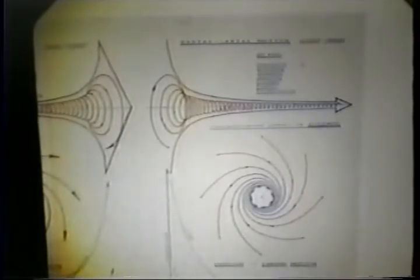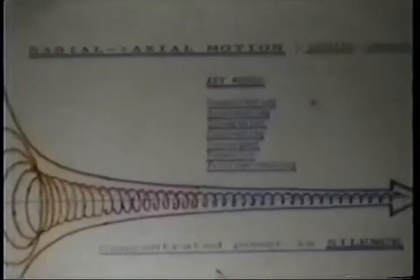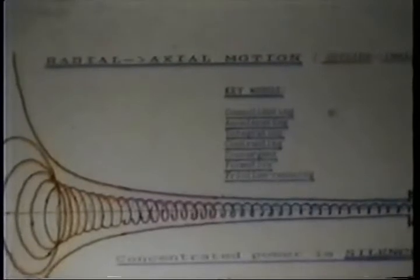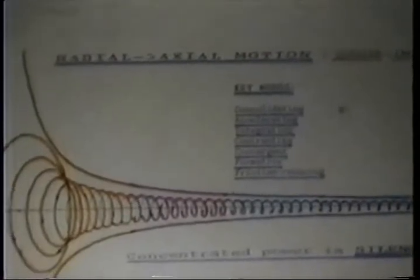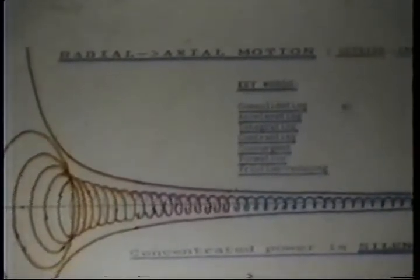The key words for radial axial motion are: consolidating, accelerating, integrating, contracting. The concentrated power is silence. If you go into the forest, all these molecular and atomic interactions and all the growth happening, but it's extremely quiet.